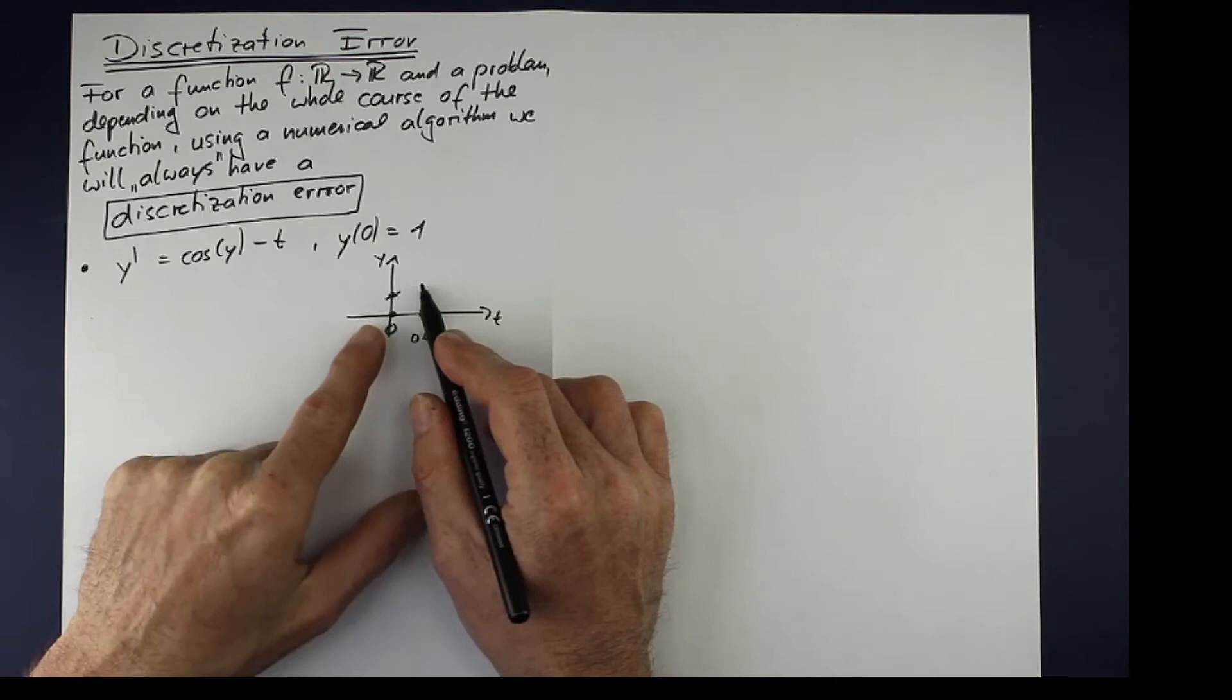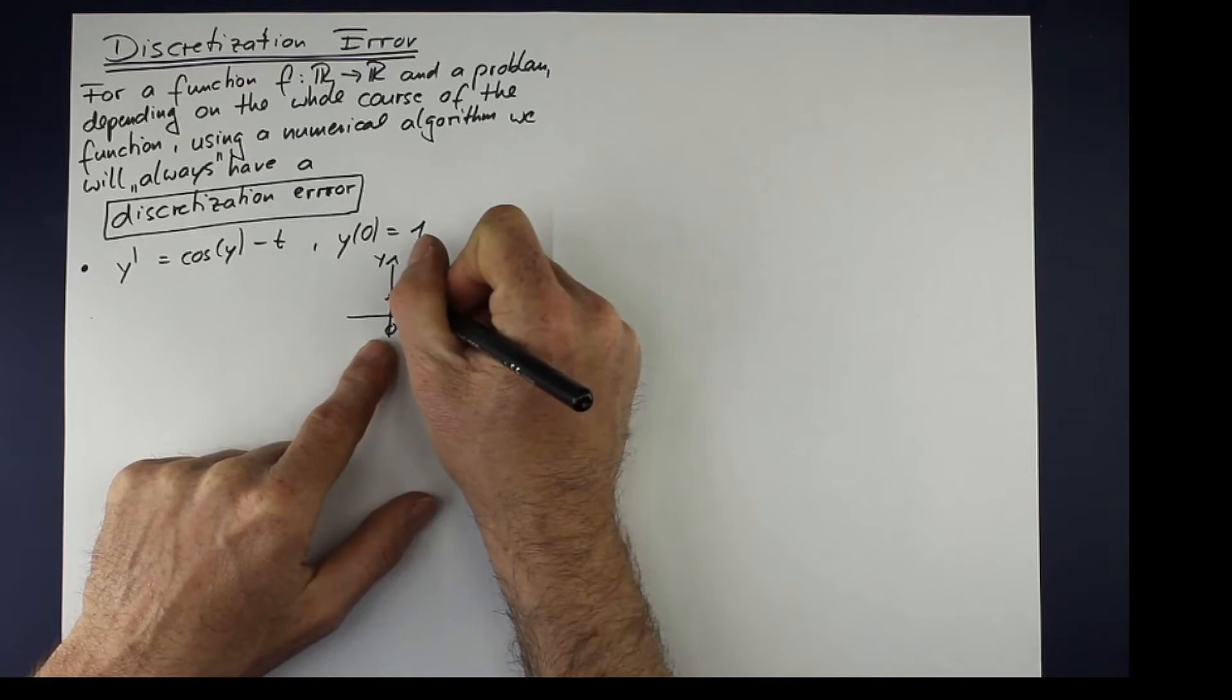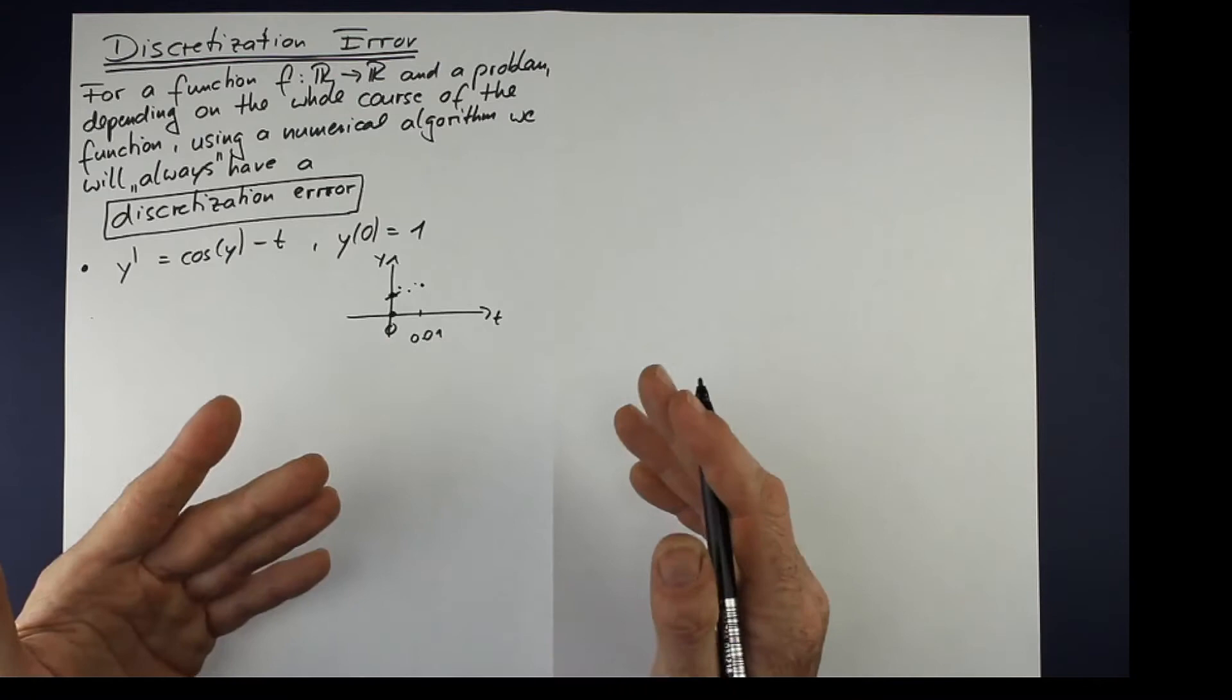And how can we find this solution point? We can't find the exact solution here in this example. So we will evaluate in between here at some specific points, depending on some numerical idea.